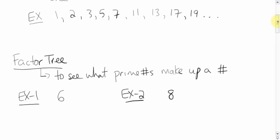Let's make a factor tree of 6. Some of you may have learned the hockey stick method — if you like that, go for it. What numbers, when multiplied, give you 6? The ones that come to mind are 6 and 1, or 2 and 3. Now 2 and 3 are prime numbers, so that's it. 2 and 3 are the prime factors of the number 6.